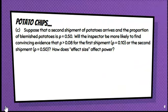Part C. Suppose that a shipment of potatoes arrives and the proportion of blemished potatoes is 50% that are blemished. Will the inspector be more likely to find convincing evidence that it's greater than 8% for the first shipment, which was 10% blemished, or for a shipment that's 50% blemished? How does effect size affect power? Now, this is talking about reality versus the null value. So if he has a shipment that's 50% bad, is that going to be more noticeable than a shipment that's 10% bad, when our standard is only 8%?